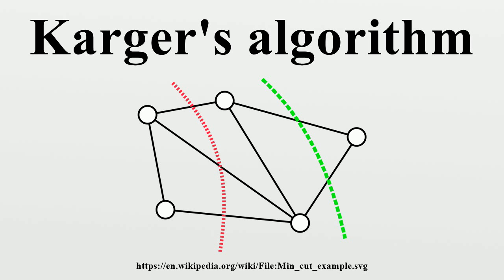The fundamental operation of Karger's algorithm is a form of edge contraction. The result of contracting an edge produces a new node. Every edge at either endpoint of the contracted edge is replaced by an edge to the new node. Finally, the contracted nodes and all their incident edges are removed. In particular, the resulting graph contains no self-loops. The result of contracting edge e is denoted.